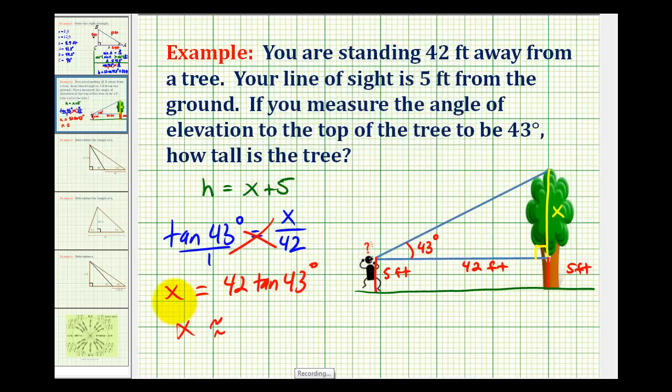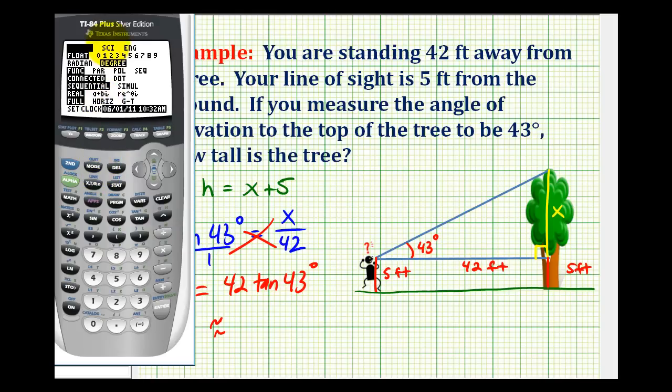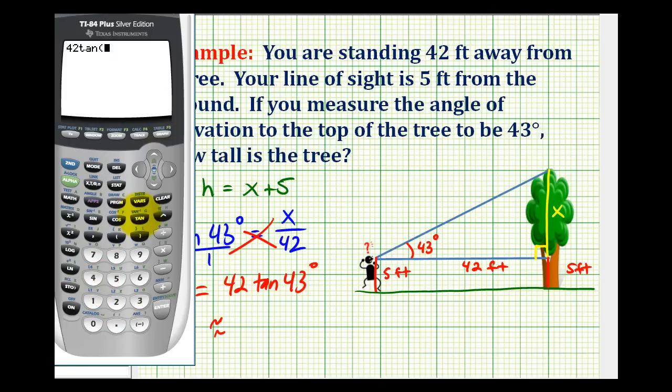And now we'll use the calculator to determine this product. Let's check our mode. We are in degree mode. So now we can just type in 42 times tangent 43 degrees. And so x is approximately 39.2 feet.